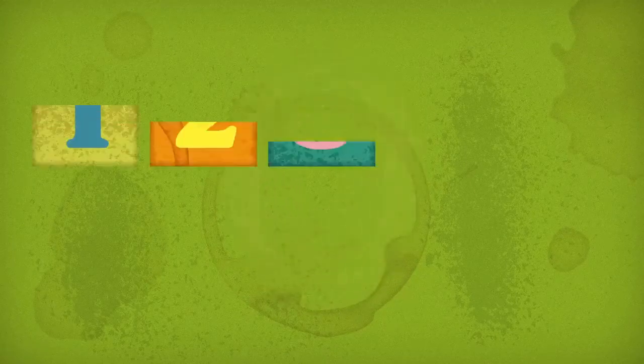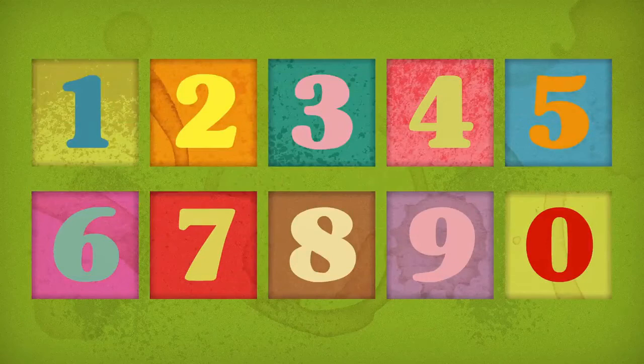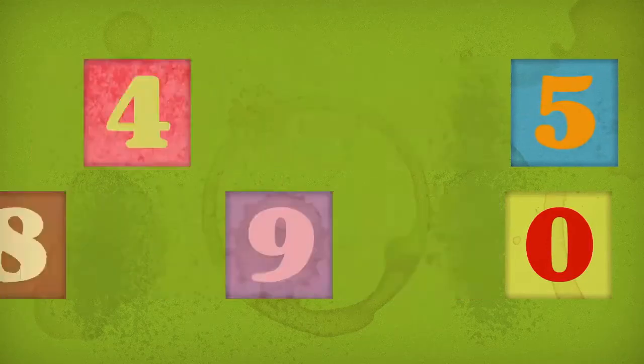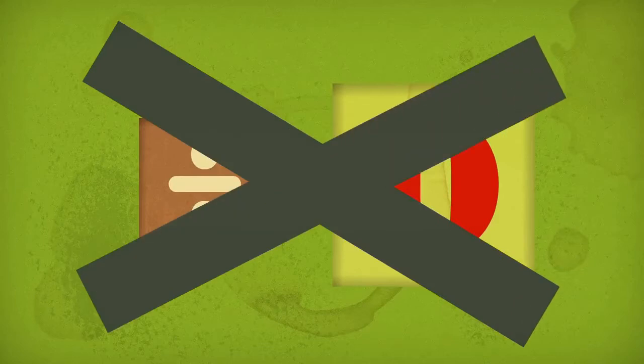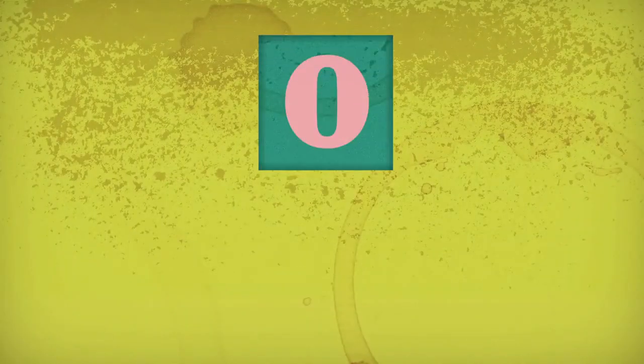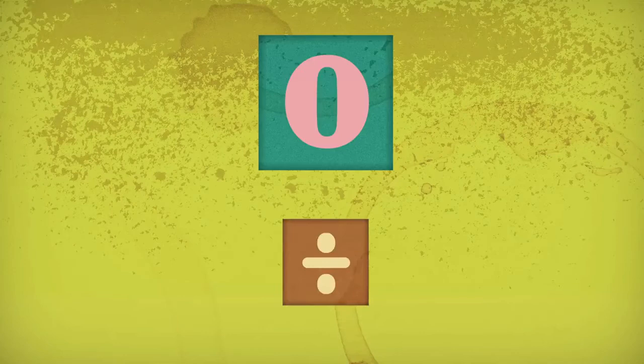In the world of math, many strange results are possible when we change the rules. But there's one rule that most of us have been warned not to break: don't divide by zero. How can the simple combination of an everyday number and a basic operation cause such problems?